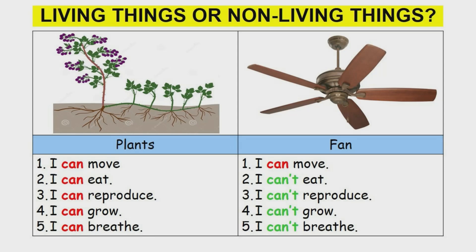Now let's look at plants and a fan. The plants can move, eat, reproduce, grow, and breathe. The fan, on the other hand, can move, but it can't eat, can't reproduce, can't grow, and can't breathe. So the plants are considered living things, whereas the fan is a non-living thing. Although the fan can move, it doesn't fulfill the other criteria of a living thing — hence it is considered a non-living thing.